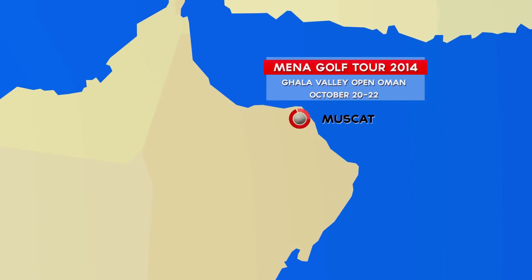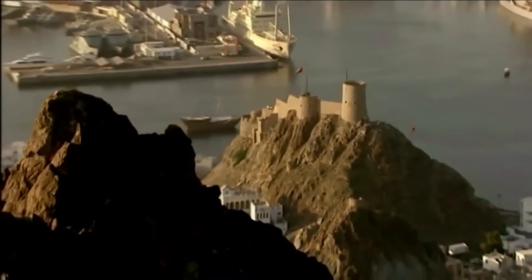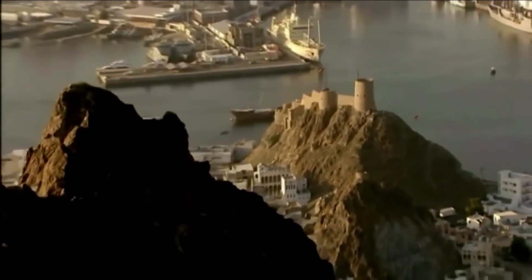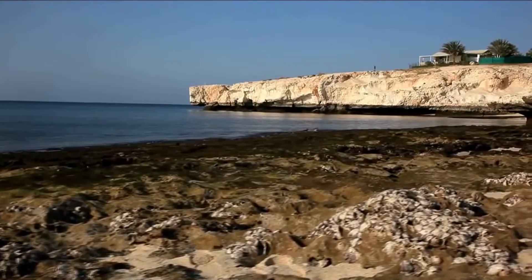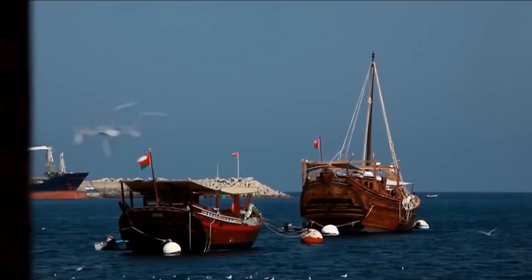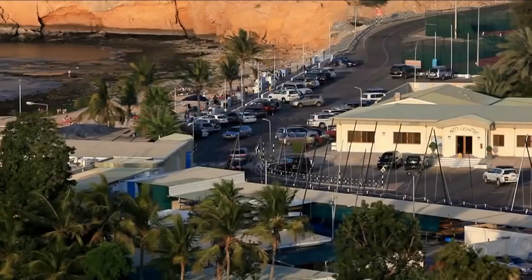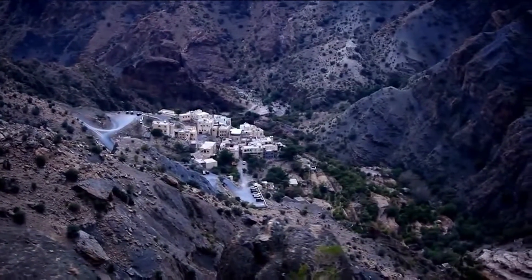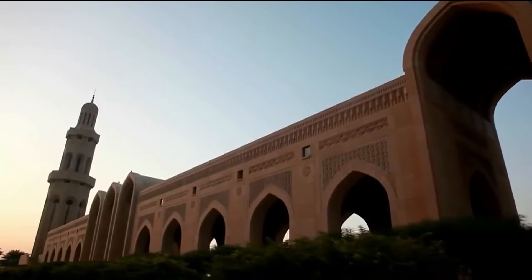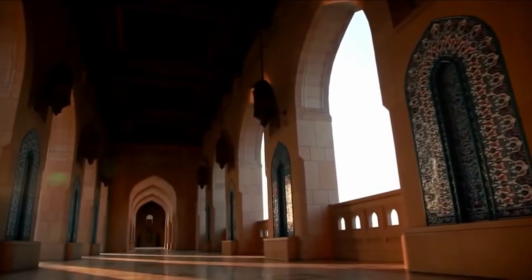Hello and a very warm welcome to the Mina Golf Tour. This week we make our way to Muscat for the Ghala Valley Open Oman. Located at the mouth of the Arabian Sea, Muscat is the largest city of the Sultanate of Oman. Home to more than 1.2 million people, its landscape is dominated by the western Hajar mountains. The metropolis is a fascinating mix of Middle Eastern and contemporary architecture.